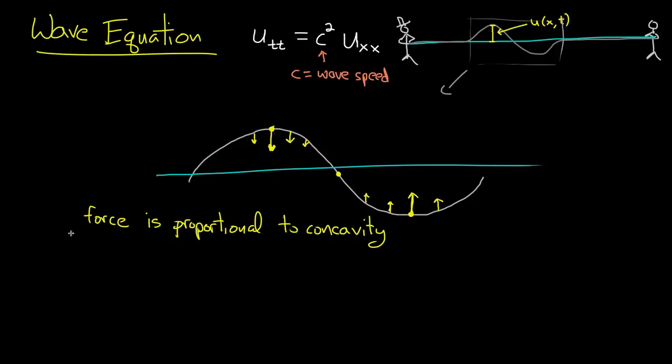Now let's take it one step further, and let's look at what we mean by concavity. Well, what's concavity? Concavity is the second derivative of this graph as a function of x. So it's simply u_xx. And why is it the partial derivative? Well we're looking at a fixed point in time. So t is fixed, and we're taking the derivative with respect to x twice to get the concavity of this graph.